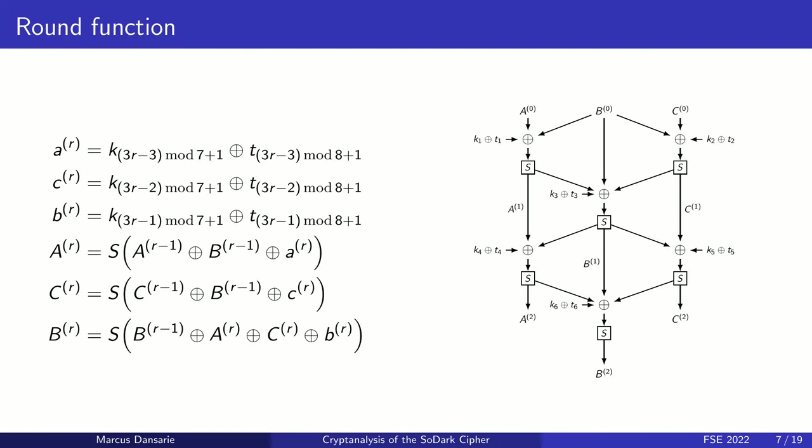Here is the definition of the round function. The illustration to the right shows the first two rounds of the cipher. Each byte of the round keys is created by XORing one key byte with one tweak byte. Each state byte is XORed with a round key byte and one or two other state bytes before applying the S-box. Despite its simplicity, the SODARC key schedule prevents many standard attacks on block ciphers. Since the number of key and tweak bytes are relatively prime, the round keys don't repeat until after 56 rounds, preventing slide attacks. One main weakness is that each round only uses three bytes of the key and the rounds can be partially decrypted using a single key byte.